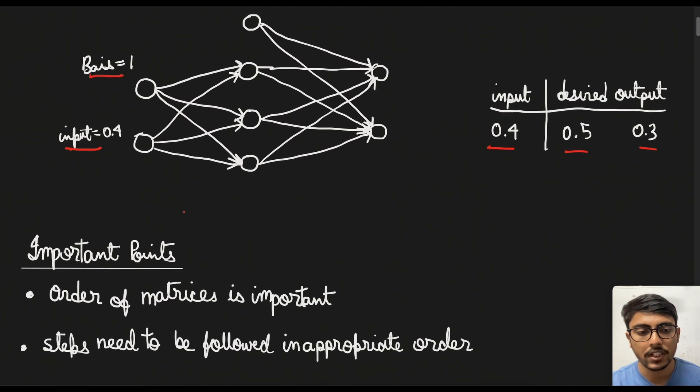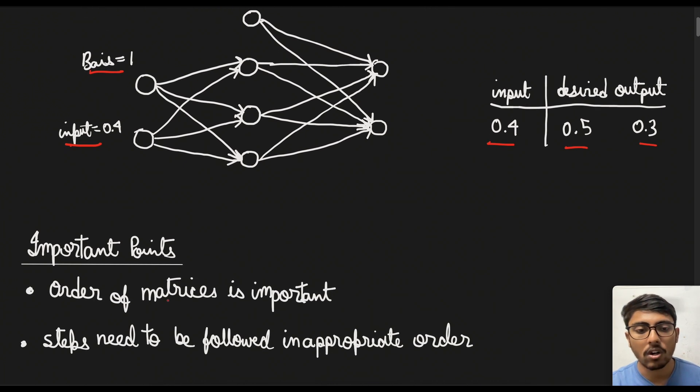Some important points which we need to consider: the order of the matrices in this method is very important because that will allow us to proceed in the calculation further. And the steps that I am going to follow in this particular method need to be followed in the same sequence. Because if you alter the sequence the results will alter and basically it will not give appropriate results.